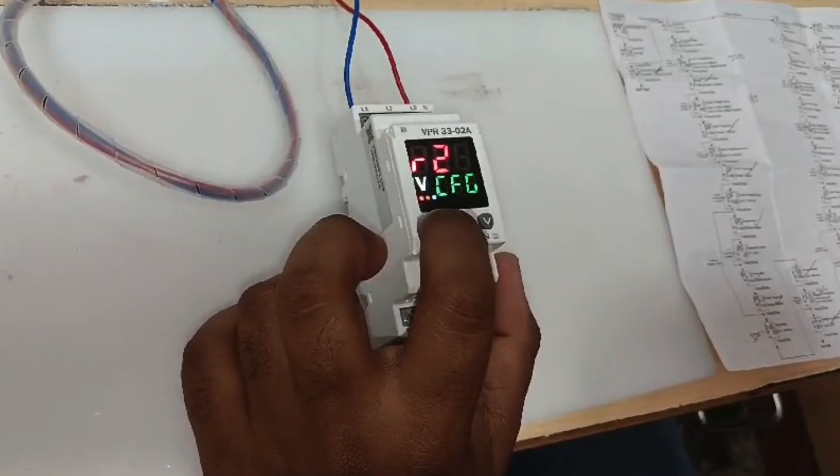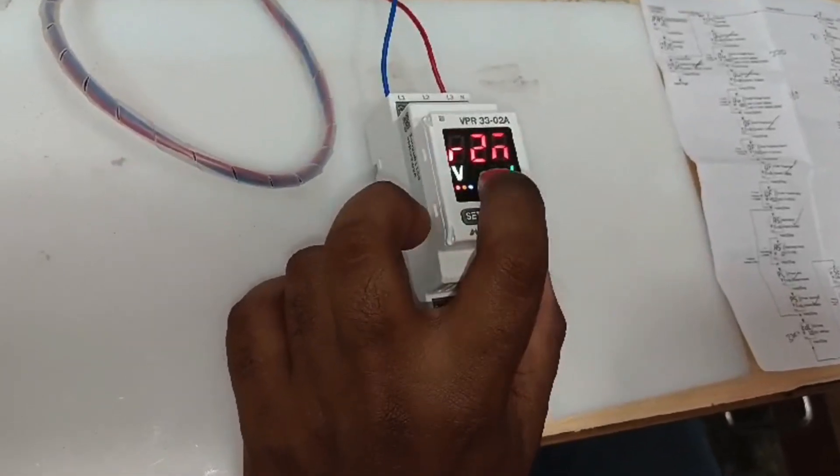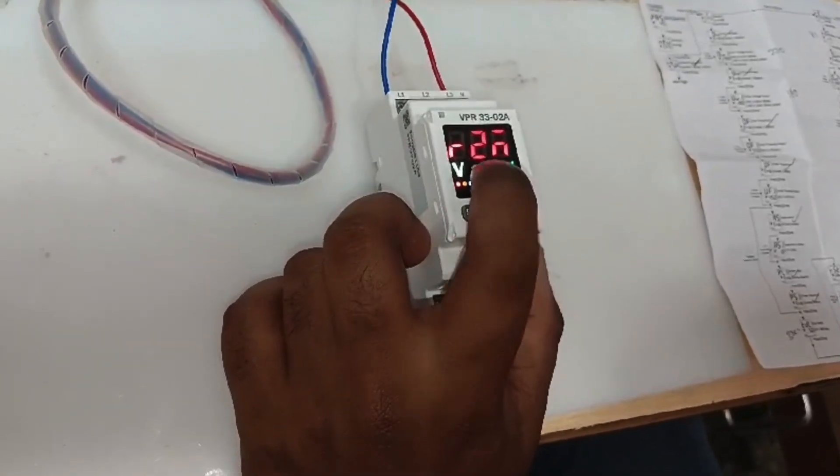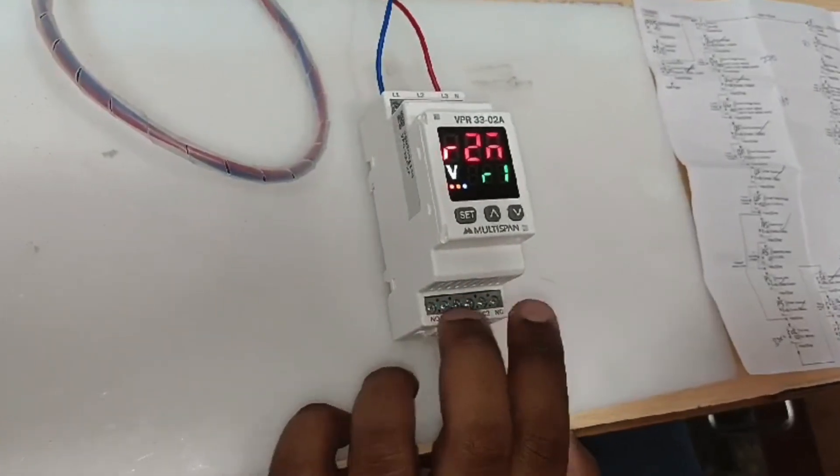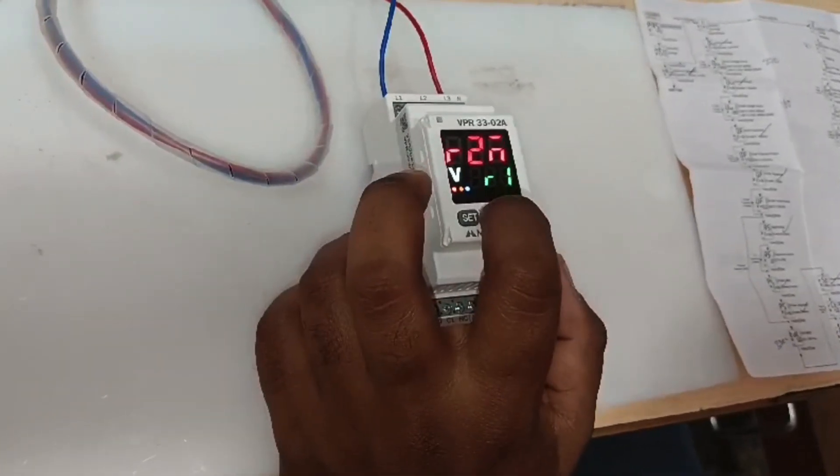Now you can go to relay configuration. When you press set button here, you will see relay R1. This is relay one, so in this relay one we have over voltage and other operators.